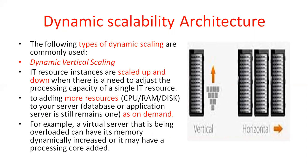Next is dynamic vertical scaling — scaling up and scaling down. Horizontal scaling is scaling in and scaling out. Vertical scaling means scaling up and scaling down. What happens here is adding more resources. The resources may be CPU, RAM, or disk — scaling up and scaling down. The instances are scaled up and scaled down when there is a need to adjust the processing capability of IT resources.